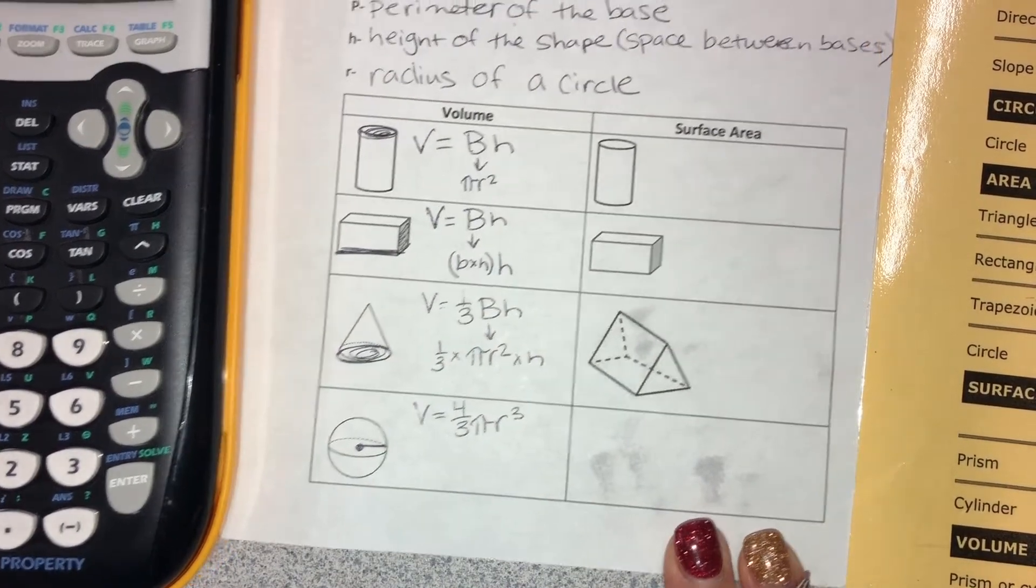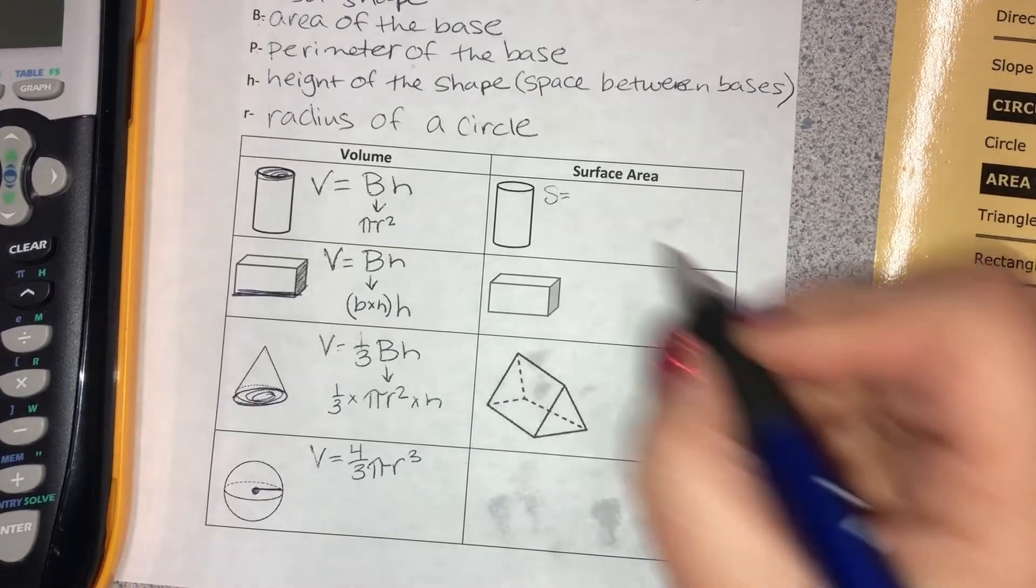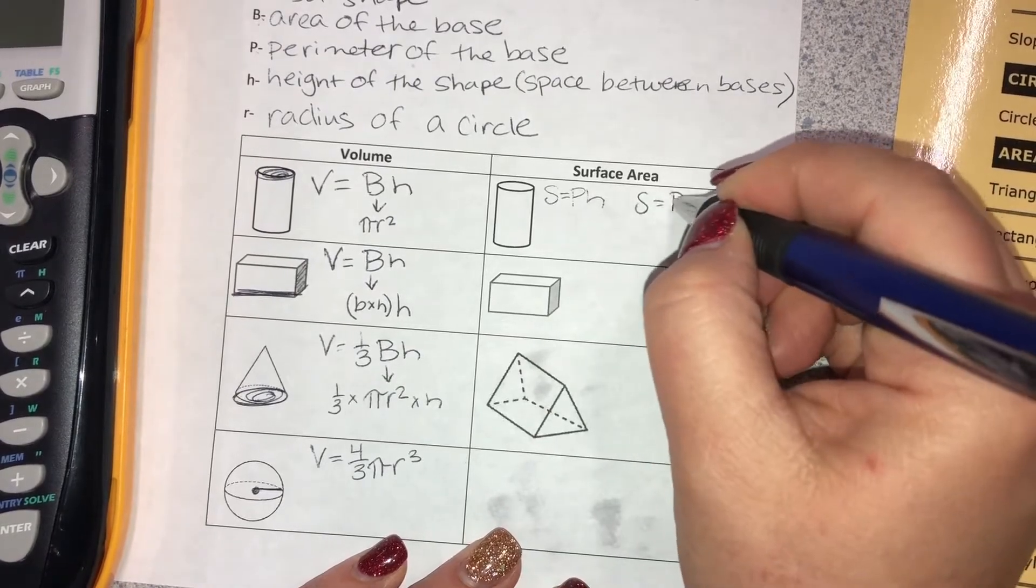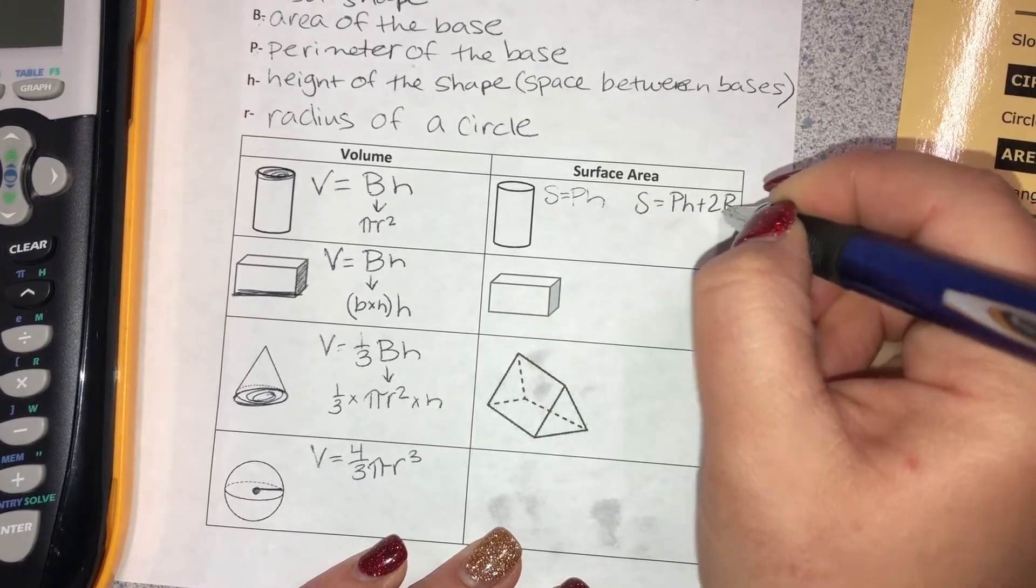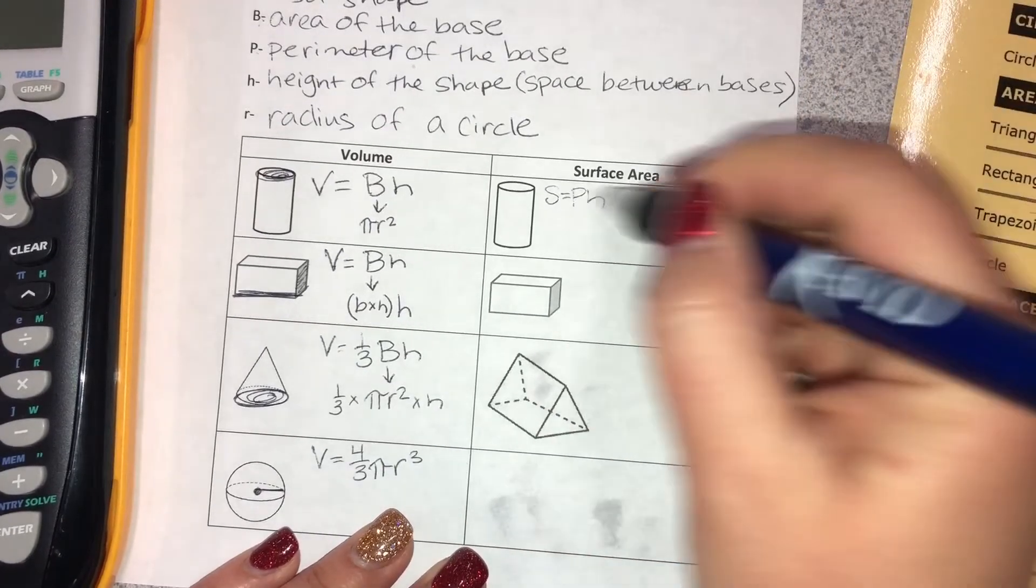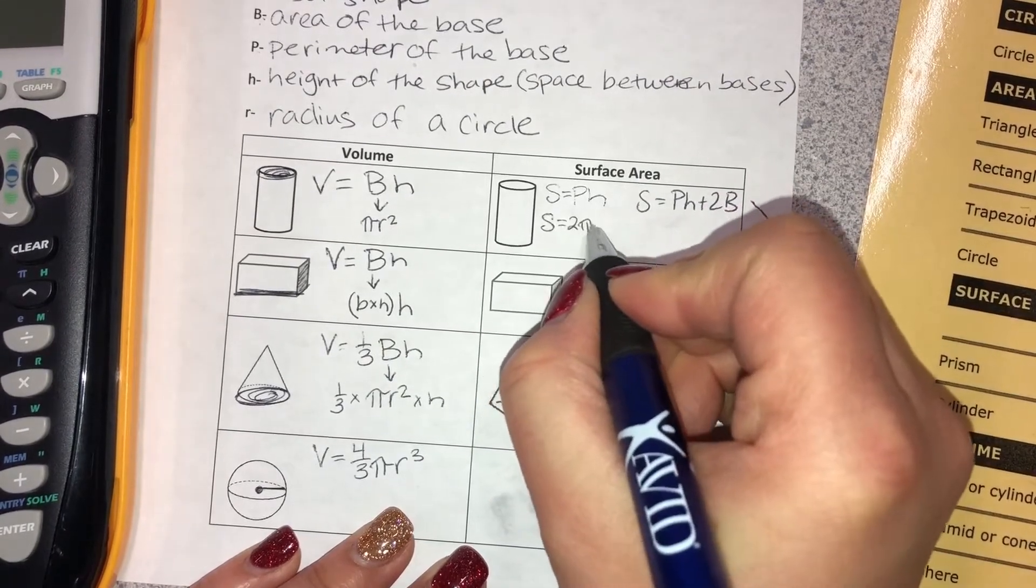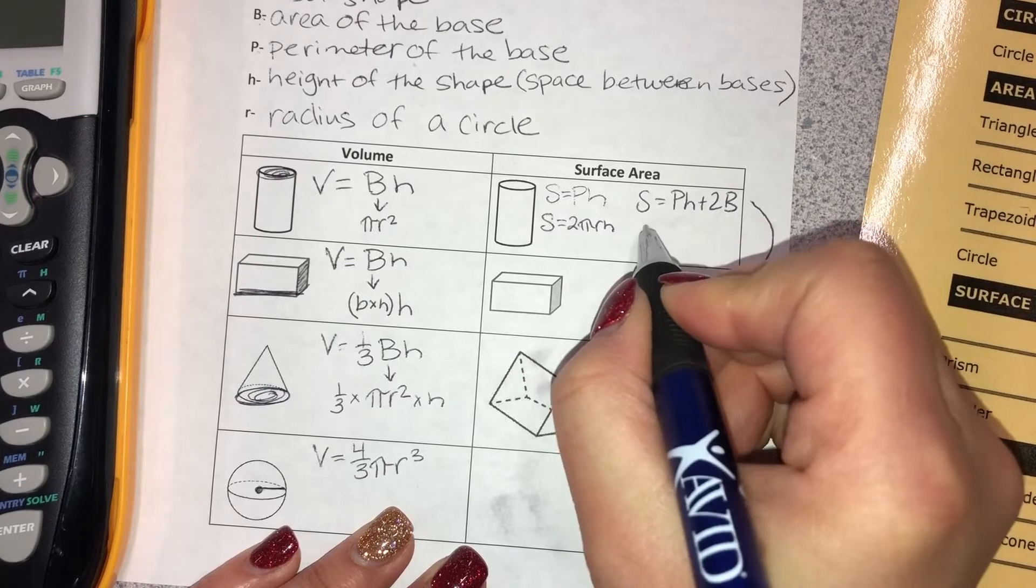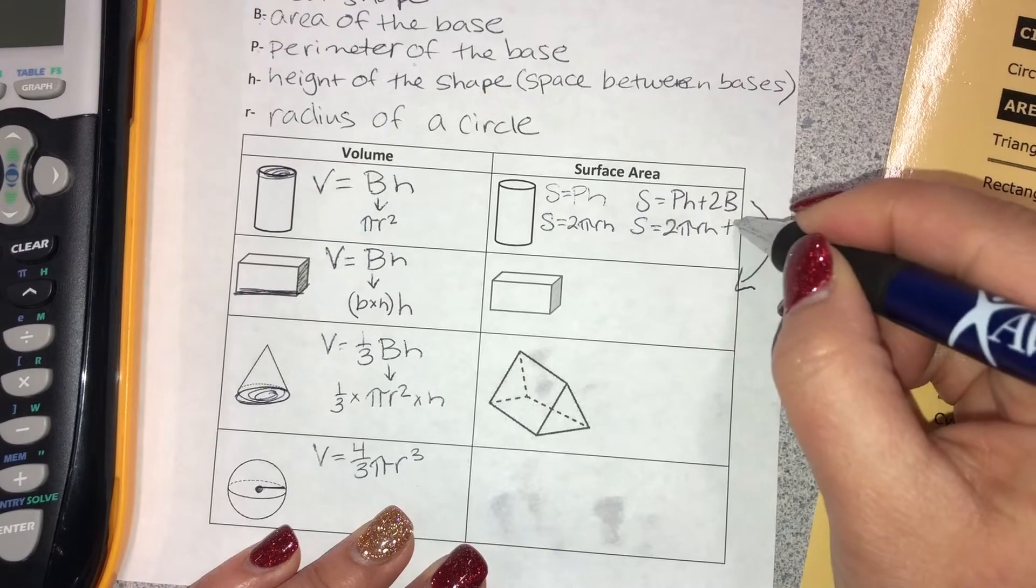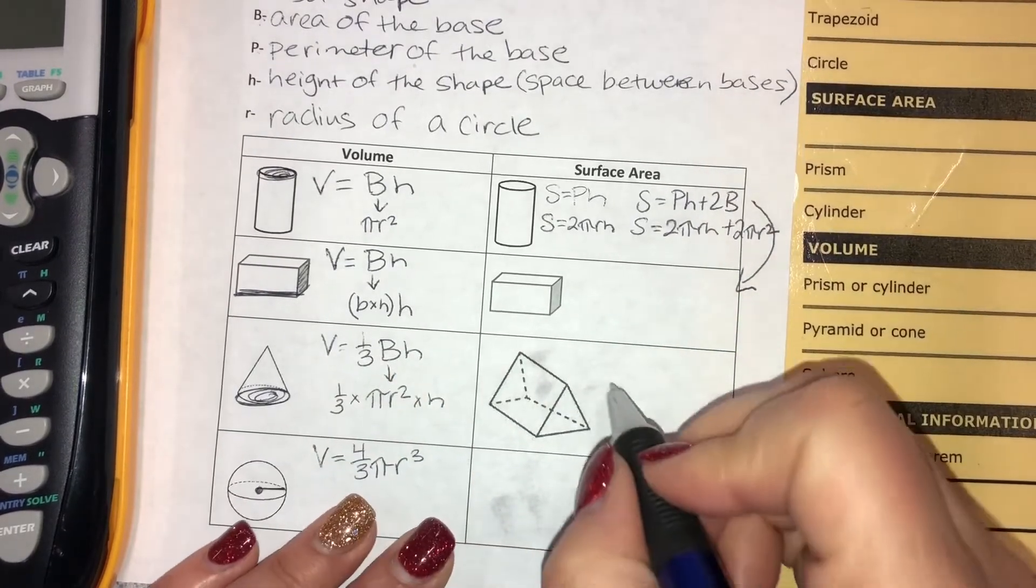The diameter is the one that goes all the way across. Surface area of a cylinder would be S equals PH if it was lateral, and S equals PH plus 2B if it was total. For a cylinder, it's S equals 2 pi RH, and then if it's total, S equals 2 pi RH plus 2 pi R squared. Make sure you look at your chart.